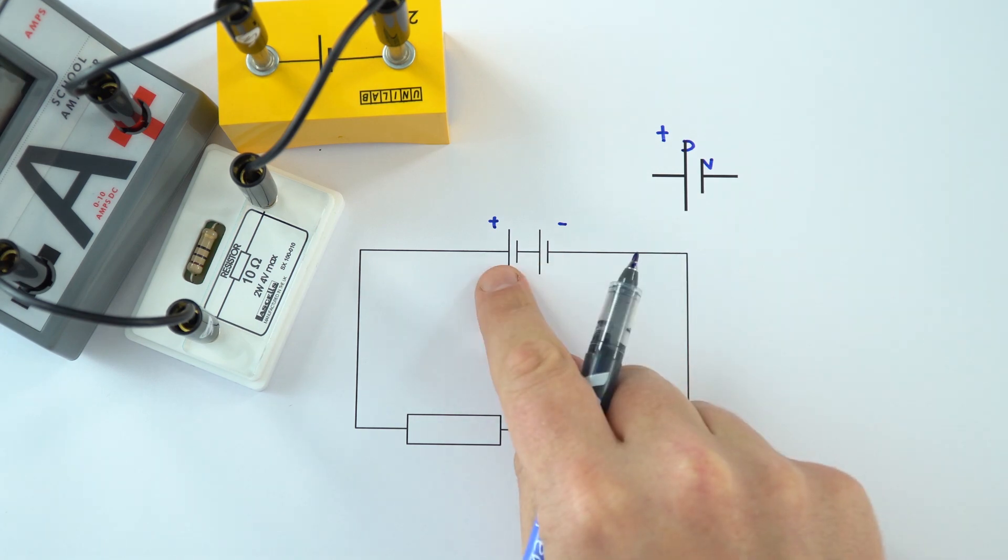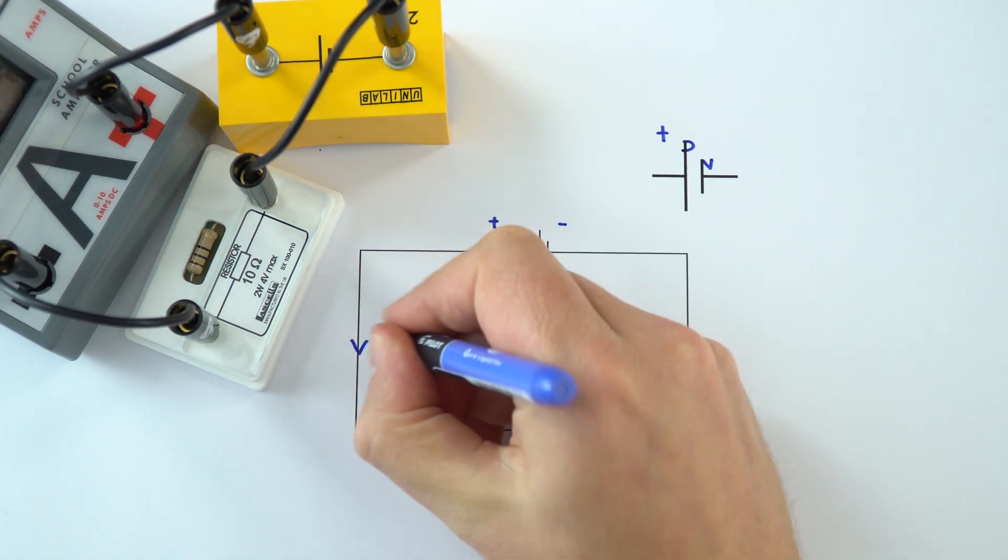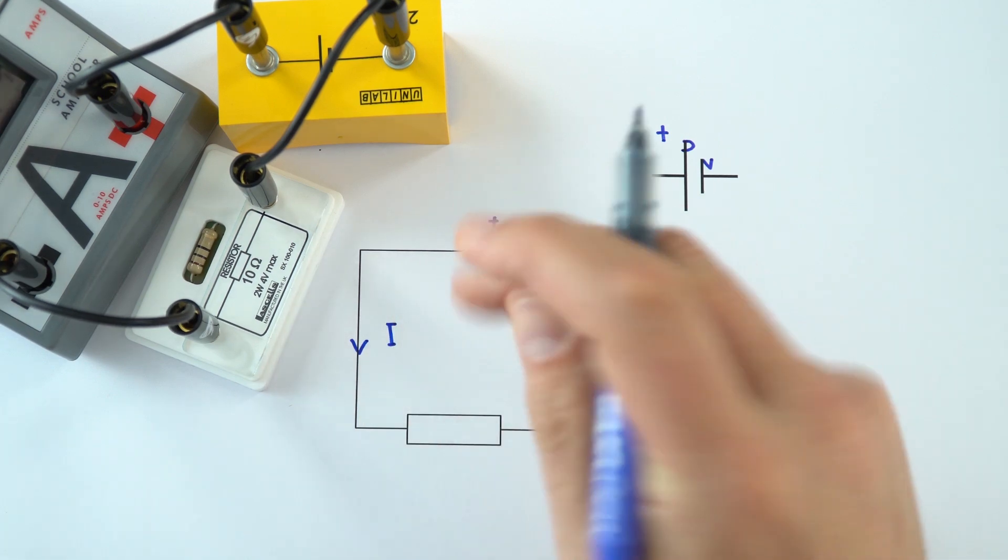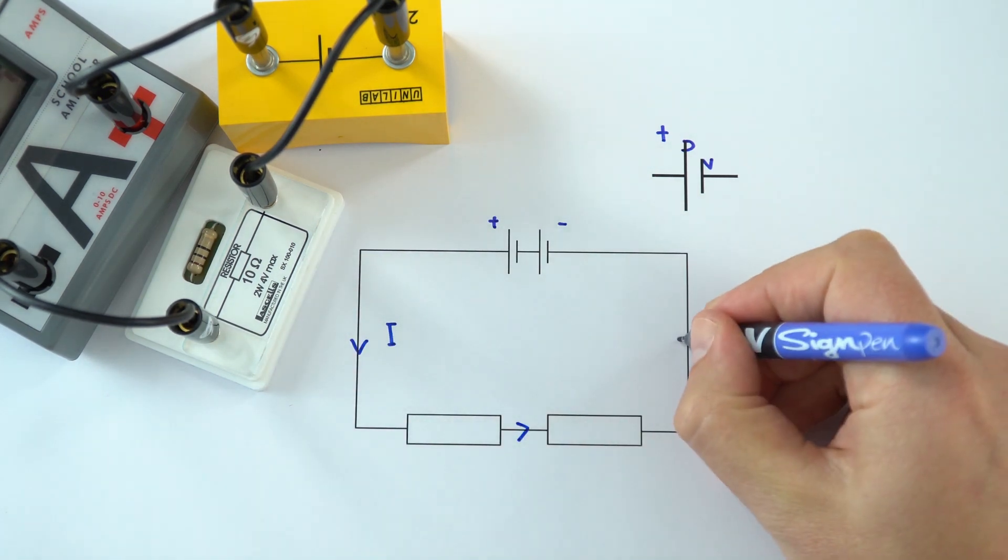Now by convention, we say that electricity goes from positive to negative. So if I just put I to show the direction of that conventional current, we have it going this way around the circuit.